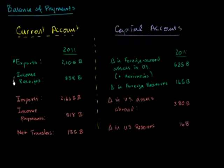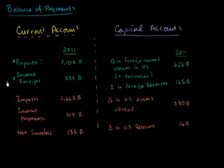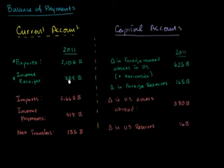This right over here is income that Americans get from owning assets abroad in other countries. Imagine that I'm an American citizen and I own an apartment complex in London. The folks in London have to pay rent on that. I convert that rent to dollars and bring it back to the US — that would be an income receipt to me. It's a reason why currency or payments are being made to the US, which is why I've colored these in green.